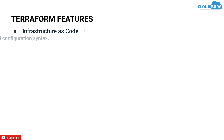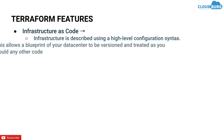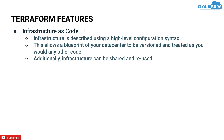Now let's talk about features of Terraform. First is infrastructure as code — infrastructure is described using a high-level configuration syntax. This allows a blueprint of your data center to be versioned and treated like any other source code. Additionally, infrastructure can be shared and reused. For example, if you have a staging environment set up by Terraform, you can reuse the same code to spin up another environment like QA, saving a lot of time.